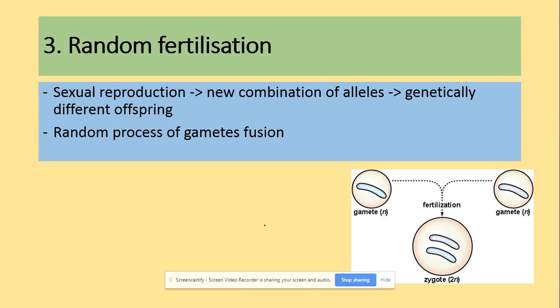Finally, we've got the random fertilization. It's the random process of the fusion of the gametes. Gametes, remember are haploid. Every time you see single lower N, that shows you that it's only a haploid cell, so it's a gamete. Once they join together, they're going to produce zygote, which is diploid, which stands for 2N.